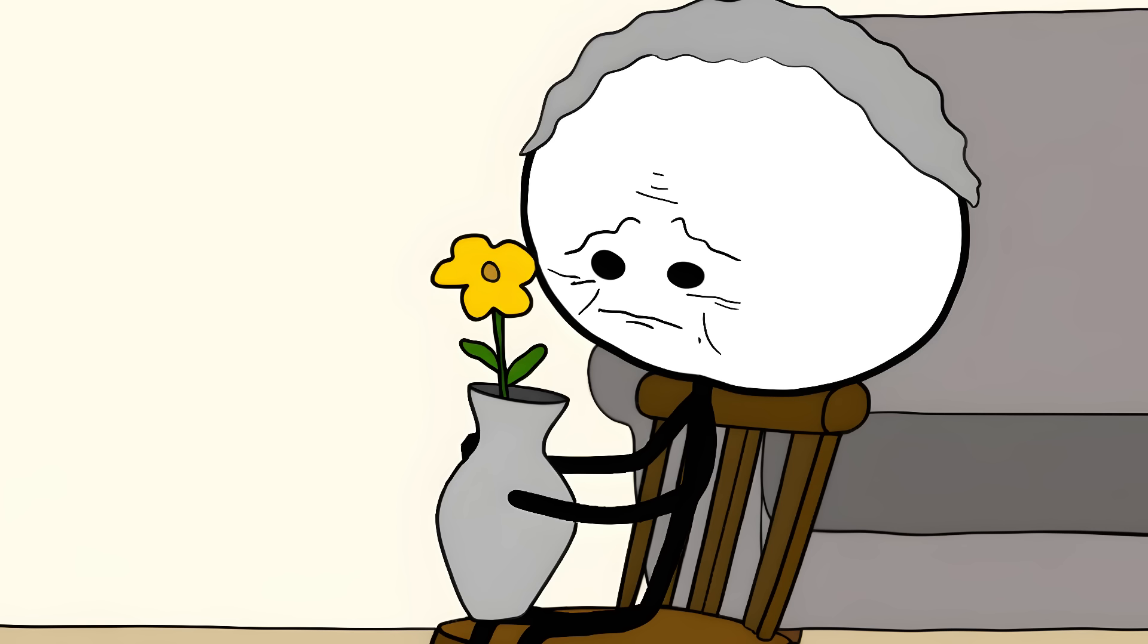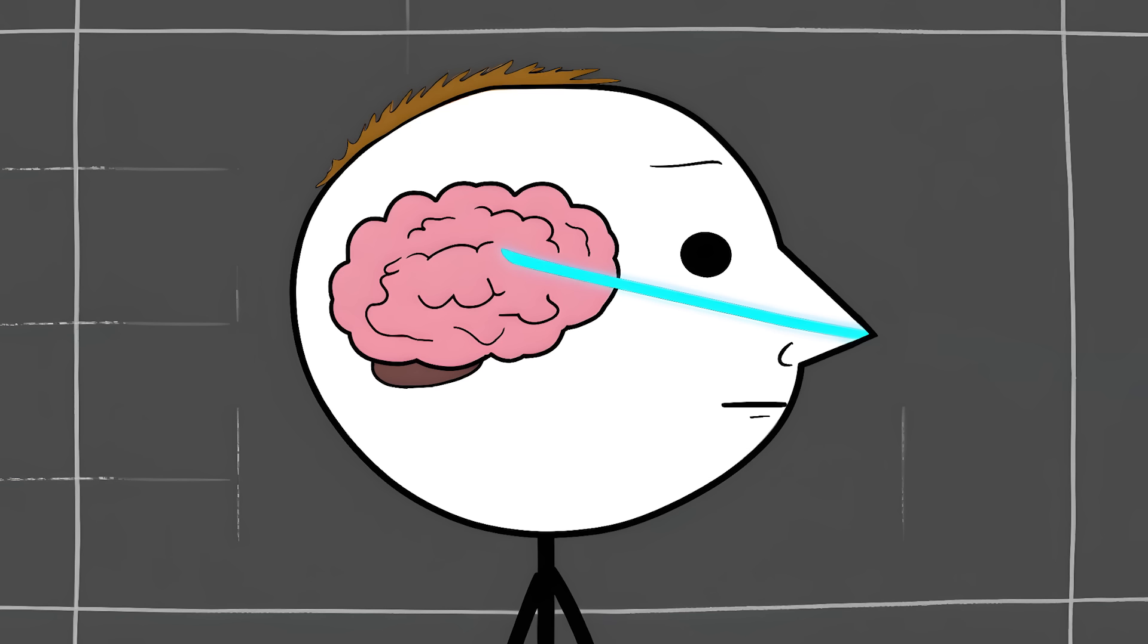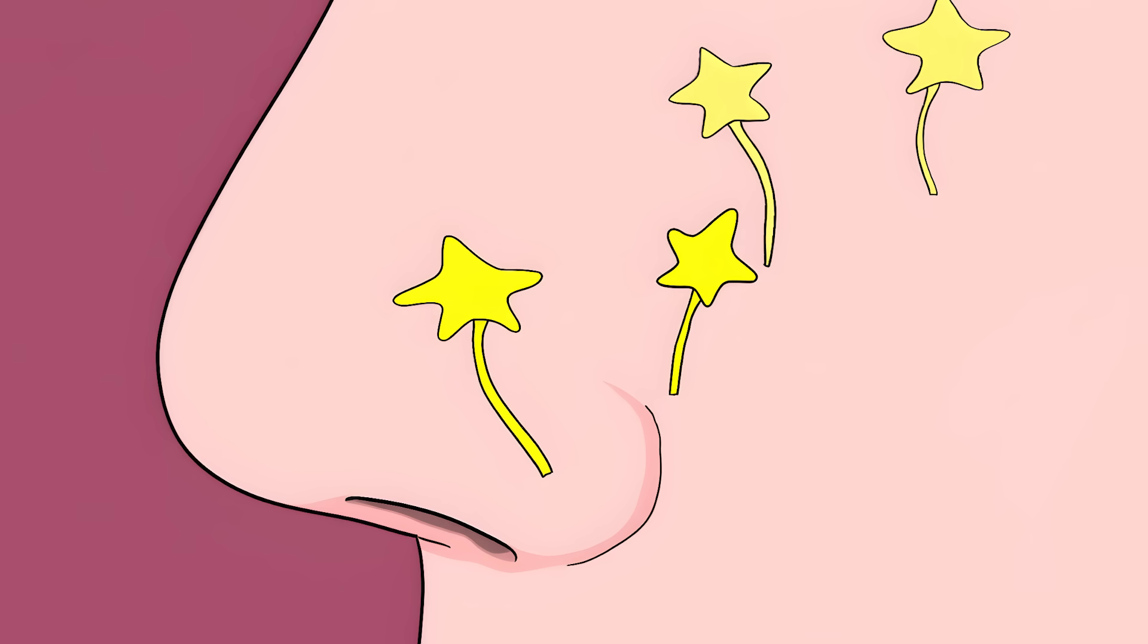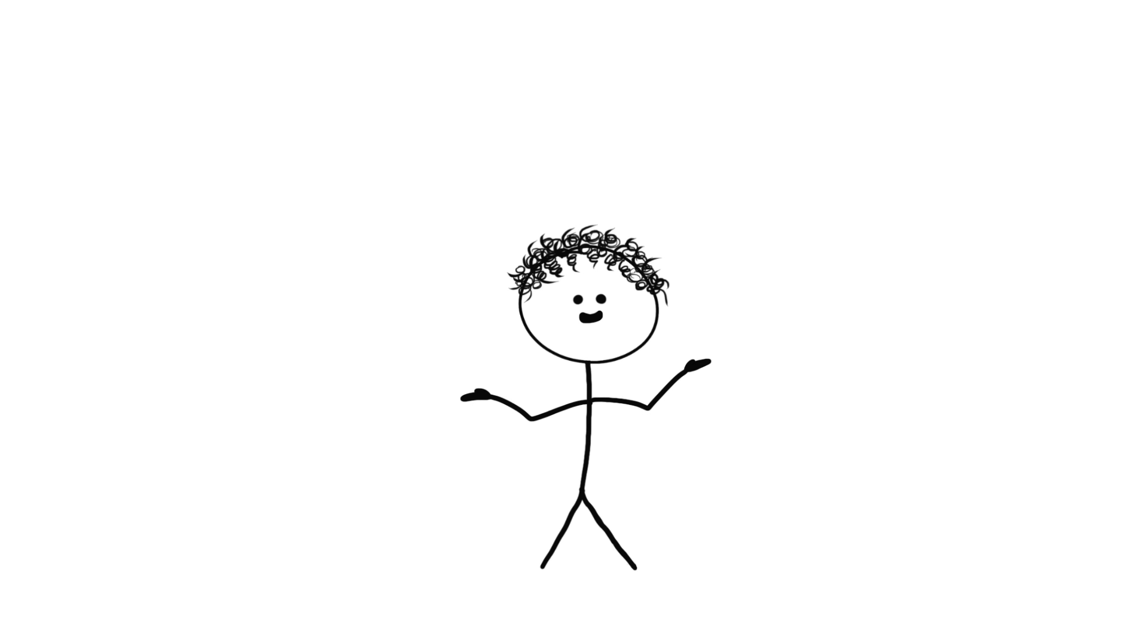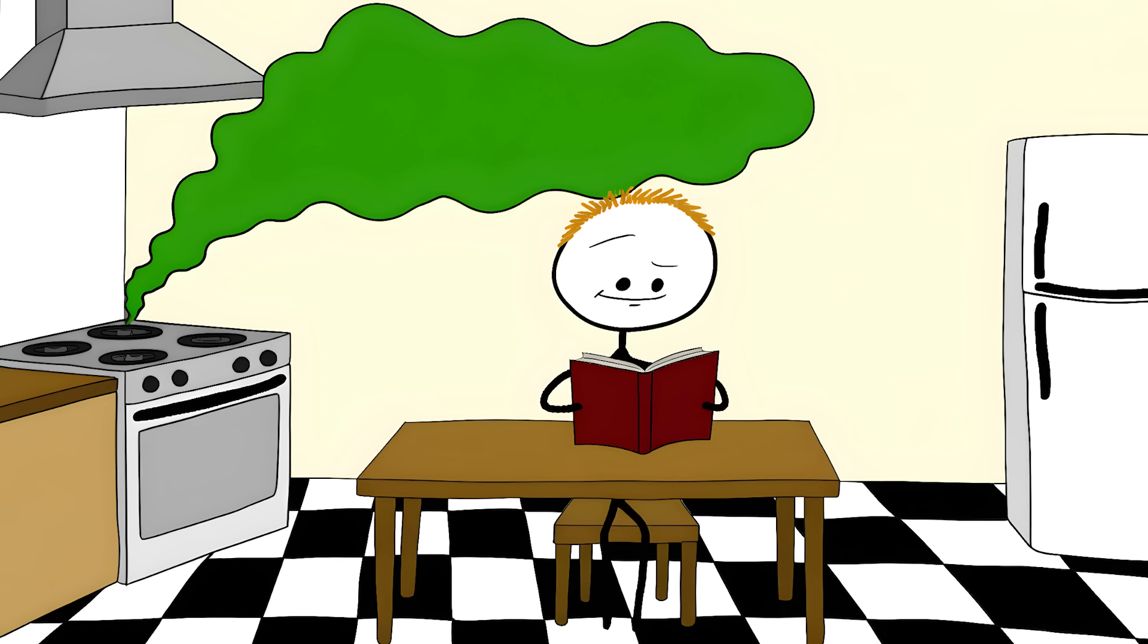Loss of smell can be an early warning sign for Alzheimer's too. Your nose is basically an extension of your brain. Those smell receptors in your nose are actually neurons, brain cells in your nostrils. When these cells start dying off, your brain is sending you a warning signal. Most people don't even notice when their sense of smell starts fading, a gradual decline that happens so slowly you might not realize it until you can't smell a gas leak.